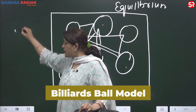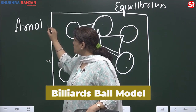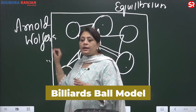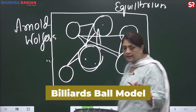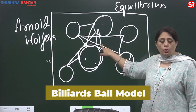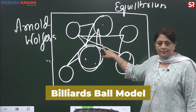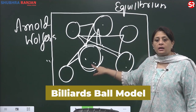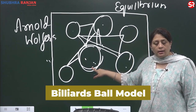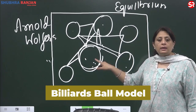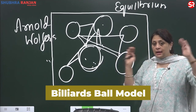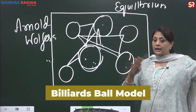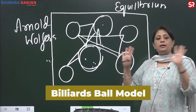This model was developed by Arnold Wolfers. The characteristics of international politics we can explain: there is no international actor, states are sovereign actors, they are stand-alone actors like the ball in the game of billiards, and each one tries to achieve an equilibrium.